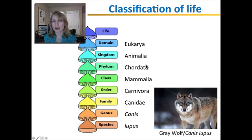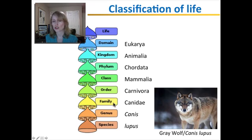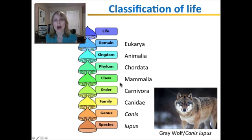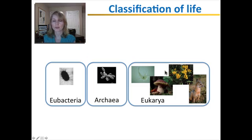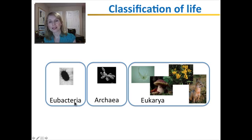You don't have to remember all of these specific groupings for the wolf, nor all the different phyla, classes, orders, families, and genuses that exist. However, I will ask you to remember the three different domains that life can be separated into: Eubacteria, Archaea, and Eukarya.